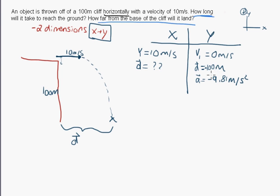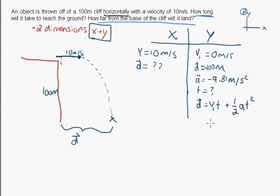From here we have enough information to solve for time. Using the kinematic formula: displacement equals initial velocity times time plus one-half a times t squared. Since initial velocity is 0 m/s, the entire first term cancels out, simplifying the equation.